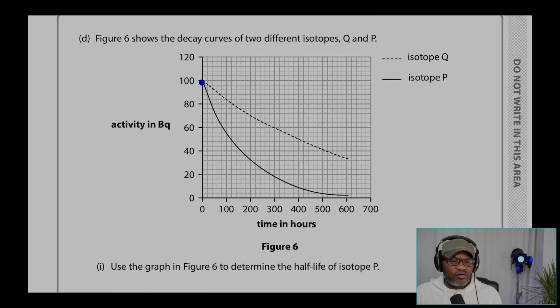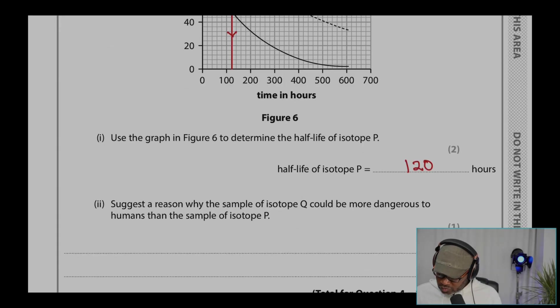We're starting at 100, half-life is 50. So you want to go from 50, what we want to do is drop 50 there, stretch it down, and that is 120. Because that's 120, 140, 160, 180, that's 120. So we write here 120.